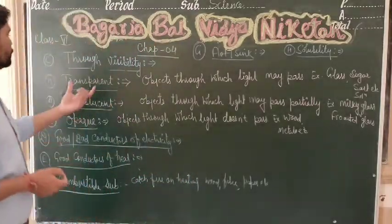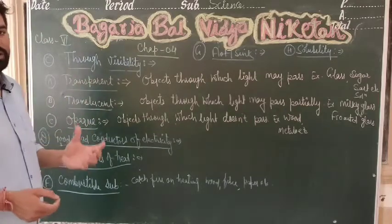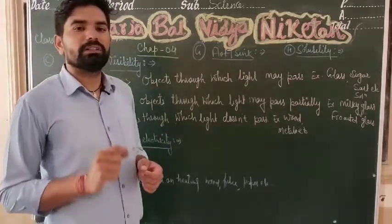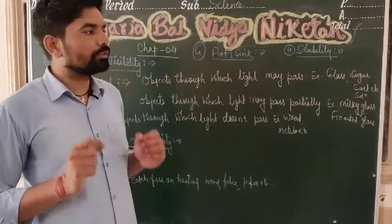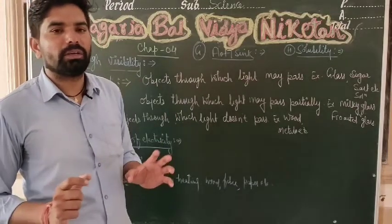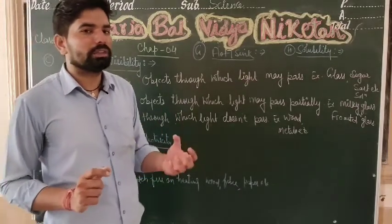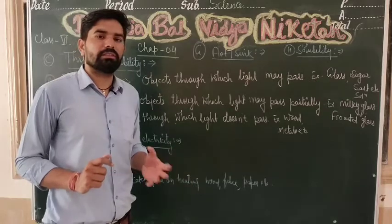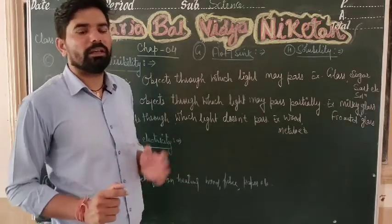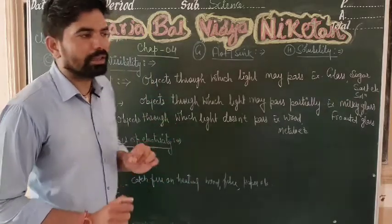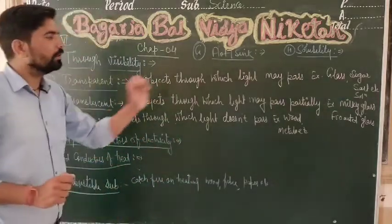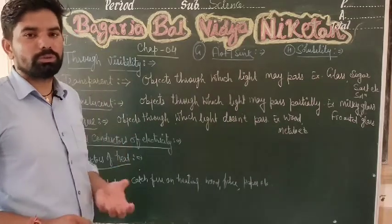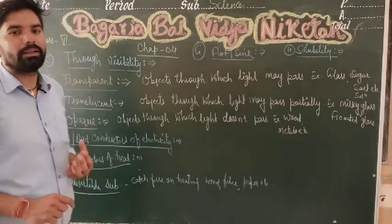A transparent object is one through which light passes completely. Full light is completely passed through these substances. Examples of transparent materials include glass, sugar solution, and salt solution.